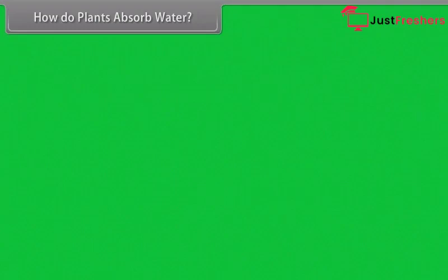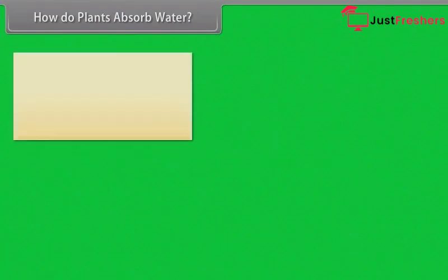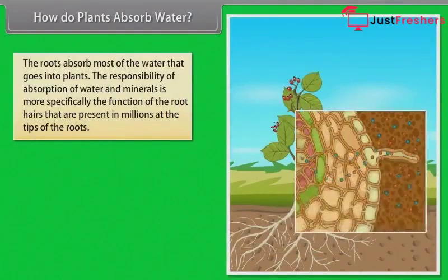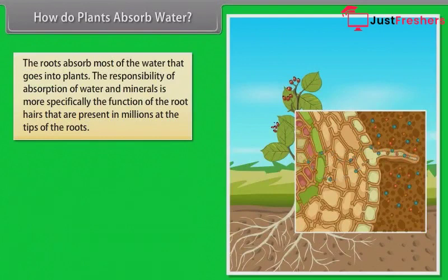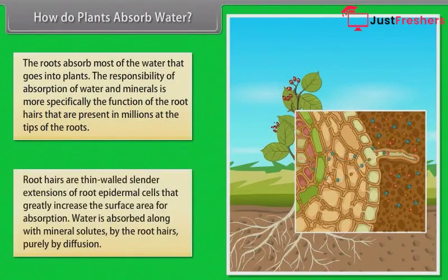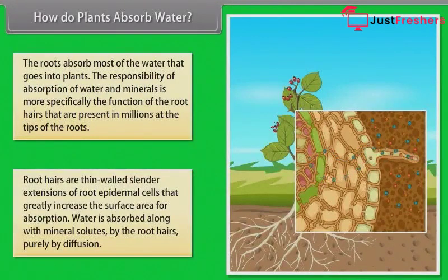Now let us understand how plants absorb water. The roots absorb most of the water that goes into plants. That is why we give water to the soil and not on the leaves. The responsibility of absorption of water and minerals is more specifically the function of the root hairs, present in millions at the tips of the roots. Root hairs are thin-walled, slender extensions of root epidermal cells that greatly increase the surface area for absorption. Water is absorbed along with mineral solutes by the root hairs, purely by diffusion.